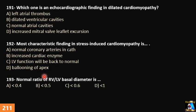Question 191: Which one is an echocardiogram finding in dilated cardiomyopathy? A) left atrial thrombosis, B) dilated ventricular cavities, C) normal atrial cavities, or D) increased mitral valve leaflet excursion. Question 192: The most characteristic finding in stress-induced cardiomyopathy is: A) normal coronary arteries on catheterization, B) increased cardiac enzymes, C) LV function returns to normal, or D) ballooning of the apex.